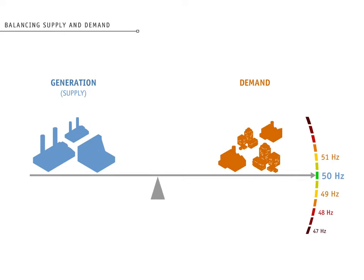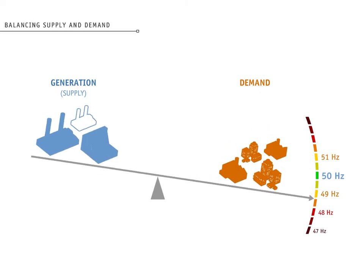If this careful balance is disrupted, for example, if there is a sudden loss of generation, the frequency starts dropping, threatening the security of our customers' power supply.